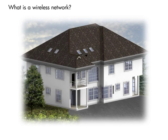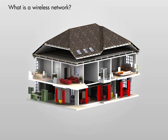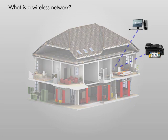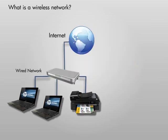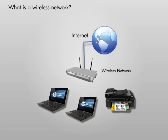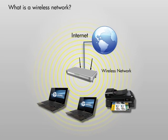A wireless network allows you to connect one or more computers or other devices such as printers so that you can share files, printers, and access to the Internet. Unlike a wired network in which you use Ethernet cables to connect devices to the network and communicate between them, a wireless network uses radio signals. This freedom from cables gives you great flexibility when using your network-connected devices.